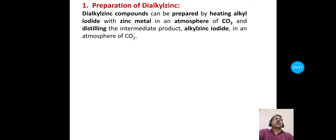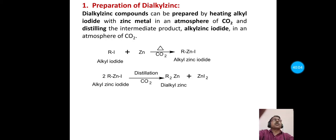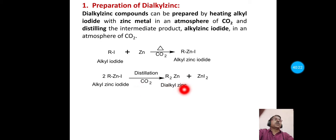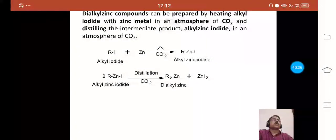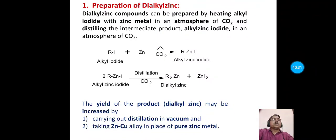Dialkyl zinc compounds can be prepared by heating alkyl iodide with zinc metal in an atmosphere of carbon dioxide. Alkyl iodide is treated with zinc in the presence of CO₂ to give alkyl zinc iodide, which on distillation in a CO₂ atmosphere gives dialkyl zinc and zinc iodide as a byproduct. To increase the yield, the reaction must be carried out in vacuum using zinc-copper alloy instead of pure zinc.